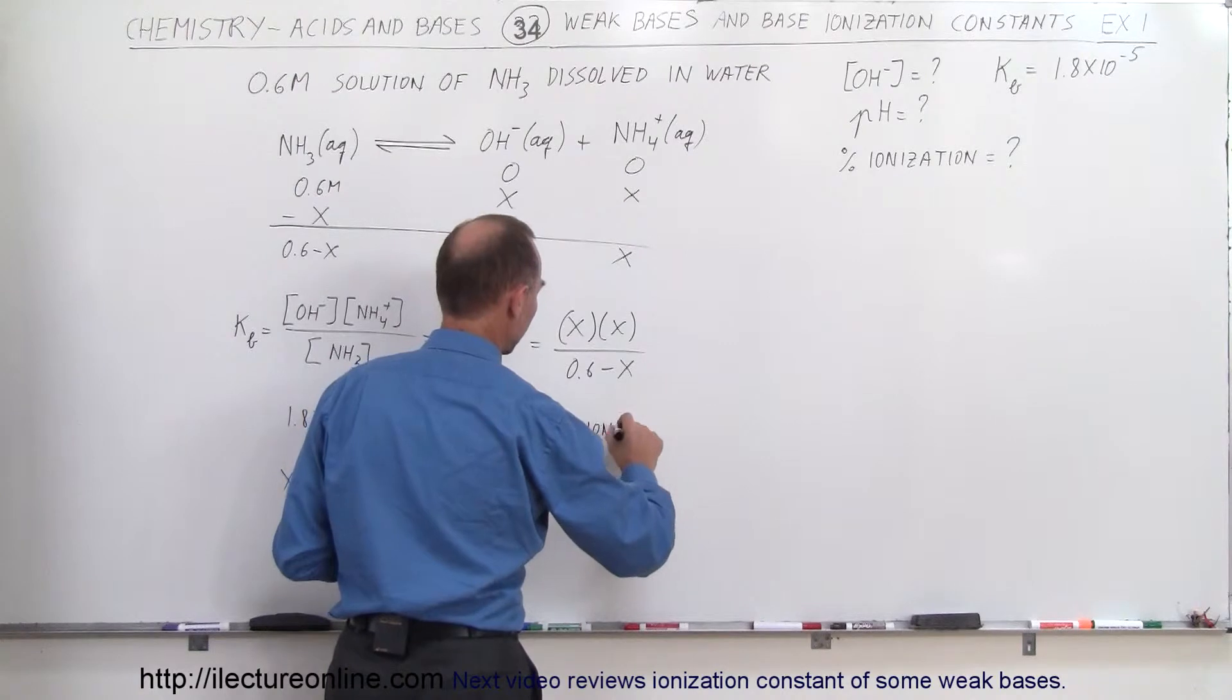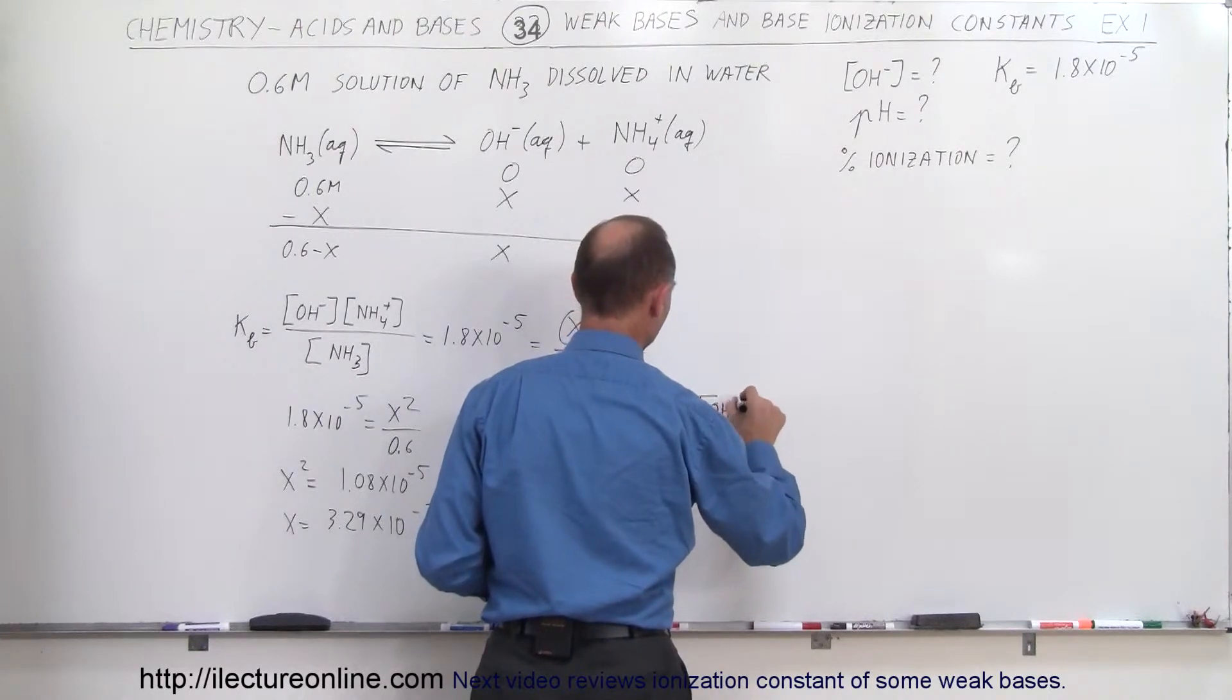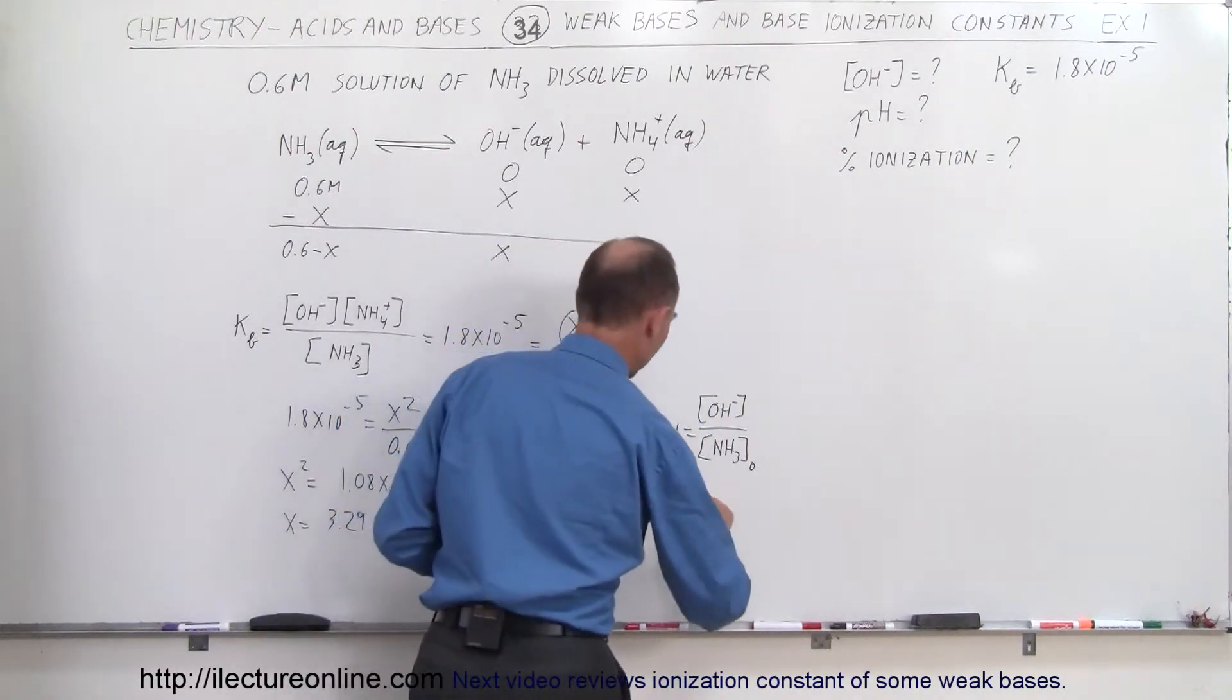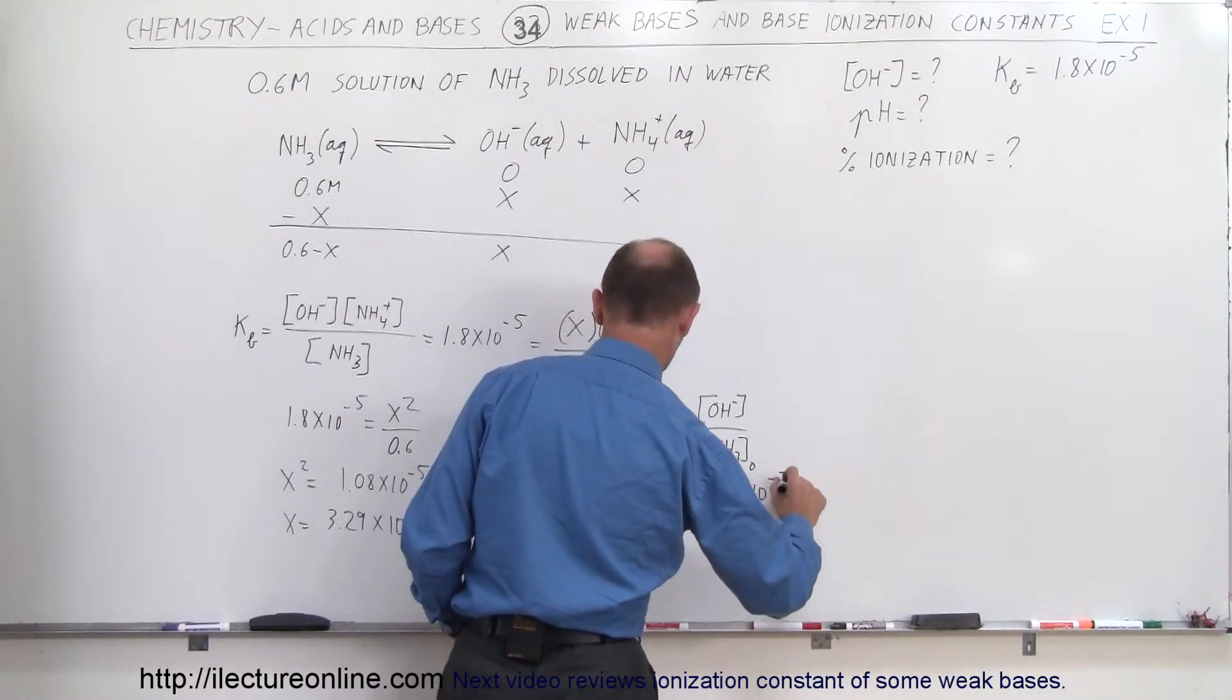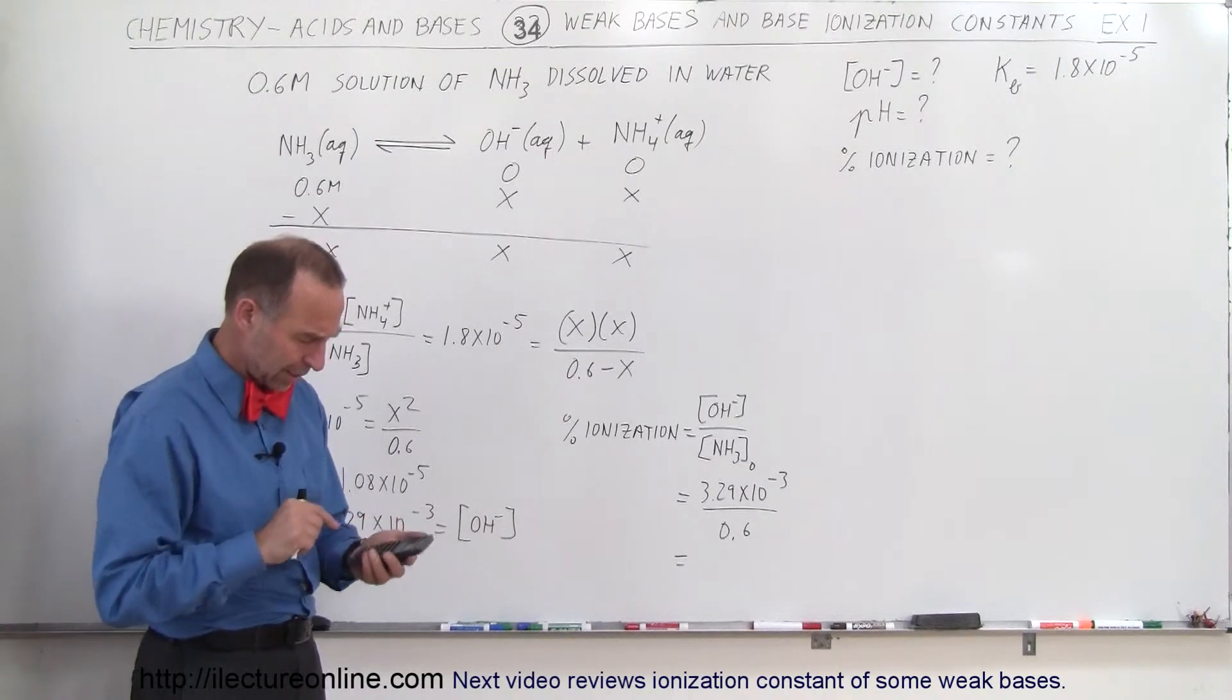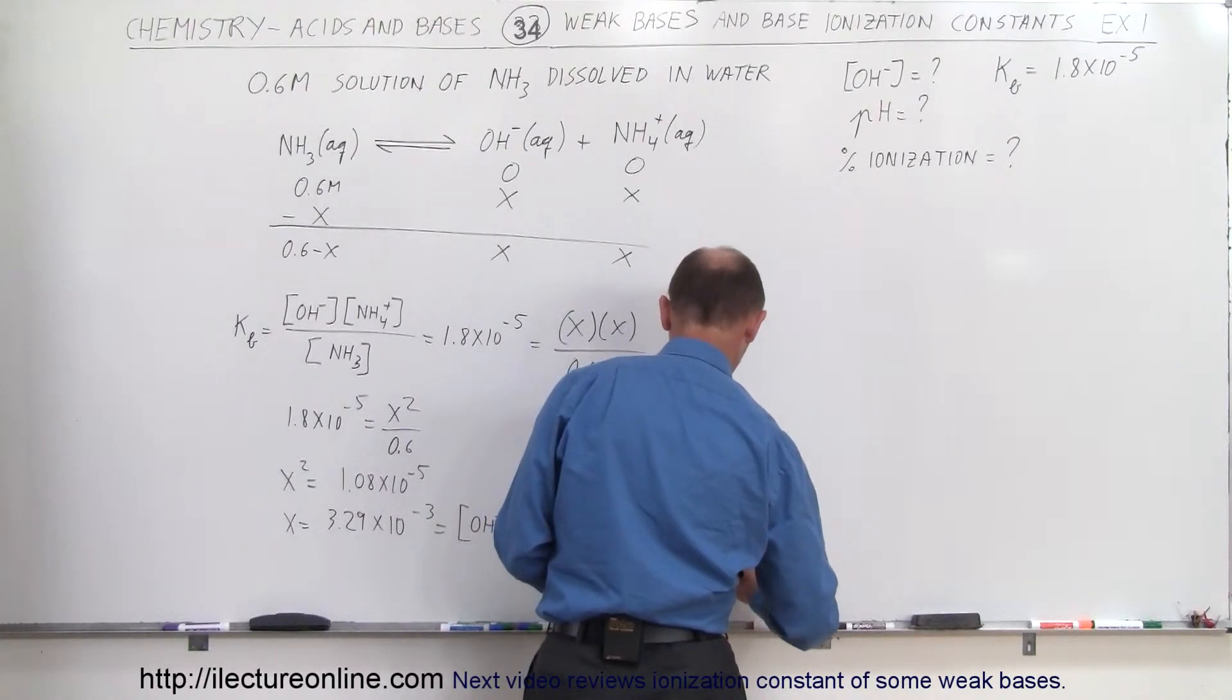The percent ionization is equal to the final concentration of the hydroxide ion divided by the original concentration of the base. So this is equal to 3.29 times 10 to the minus 3 divided by 0.6, and let's see, divide by 0.6, and then times 100, and that gives me, so this is equal to 0.55%.